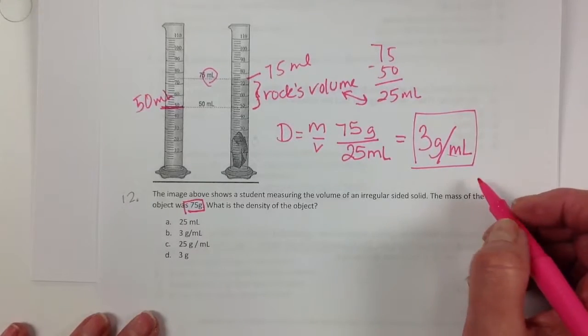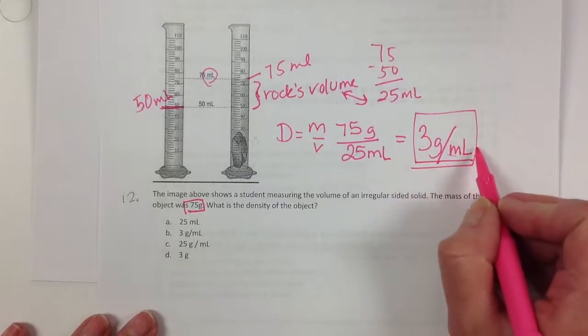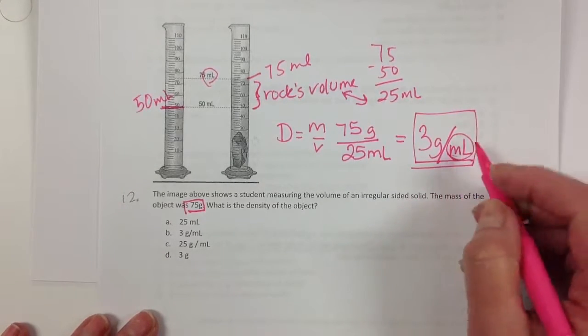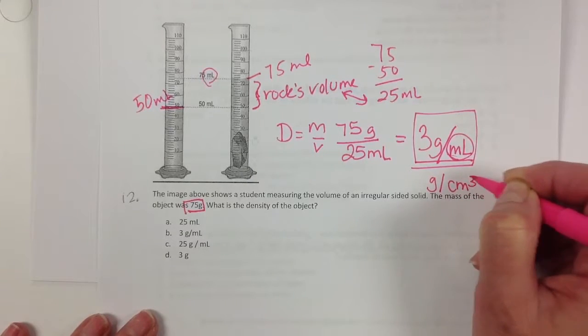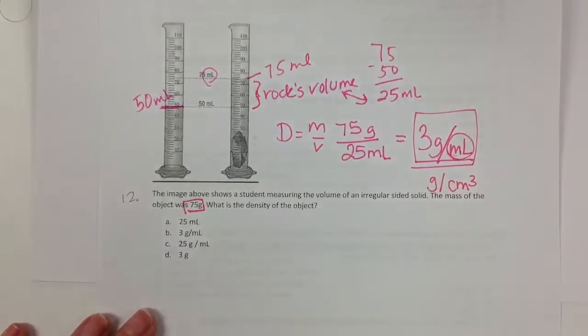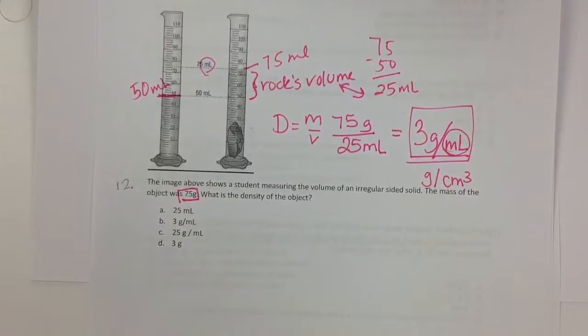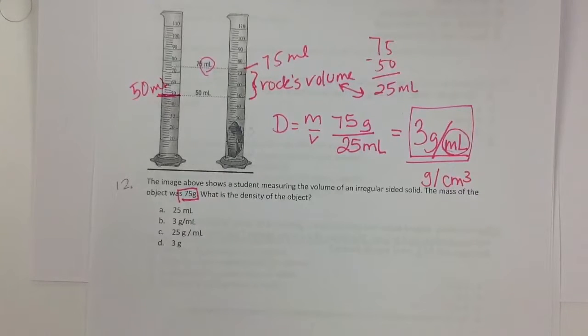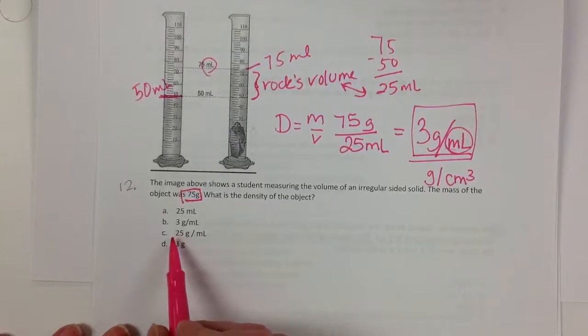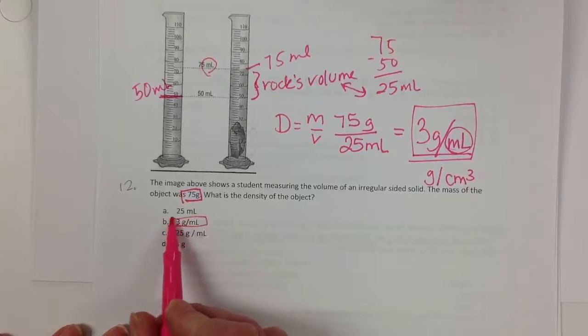Remember if you are not using a liquid for volume, it might look like centimeters cubed. These are actually also interchangeable. But you want to make sure you go with the volume if your problem states you're looking at volume. So our answer on this one here would be 3 grams per milliliter.